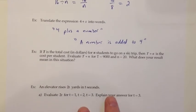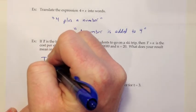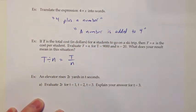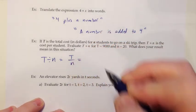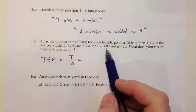Let's try that same translation type of skill in the context of an application. If t is the total cost in dollars for n students to go on a ski trip, then t divided by n is the cost per student. Evaluate t divided by n for t equals 9000 and n equals 20, and what does your result mean in this situation? First I'm going to write down the expression t divided by n. As I said up above, I'd rather write that as t over n, so I'm going to go ahead and do that. I'm going to plug in my numbers, and because they want to know what it means in this situation, I'm going to plug in the numbers with units.